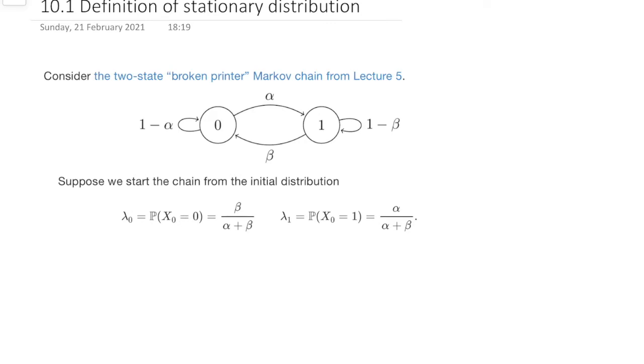And it says, suppose we start from this particular initial distribution. So let's think, what's the probability that we're in state 0 at time 1? As in, what's the probability that x1 equals 0? Well, as always, there's only one thing we can do, which is we can condition. We can condition on where we start. So maybe we start in state 0 and stay there. Or maybe we start in state 1 and move there.